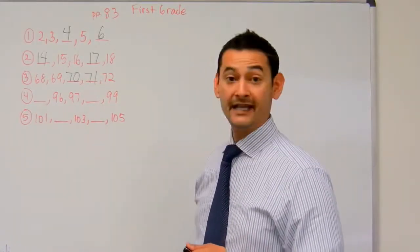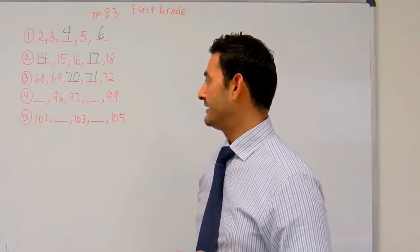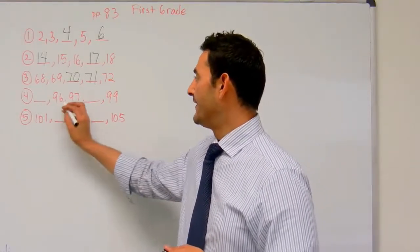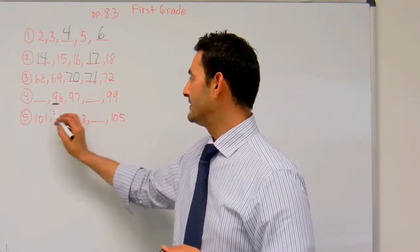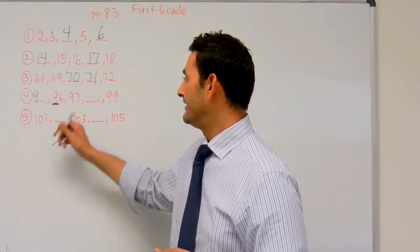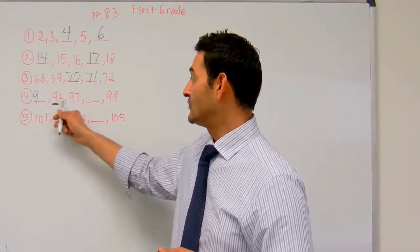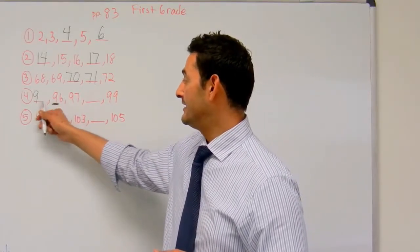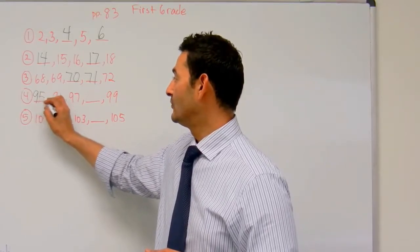Now let's take a look at number 4. Here we have another missing blank, but I have a 96 here. Look, this is the tens place, so I know that's going to be a 9, and this is the ones place. So if that's a 6, then one less will be a 5.